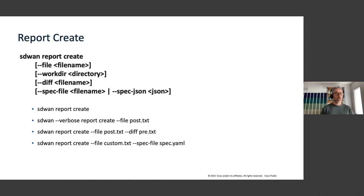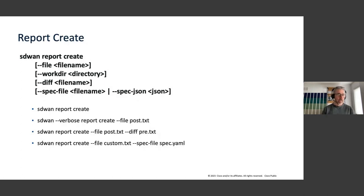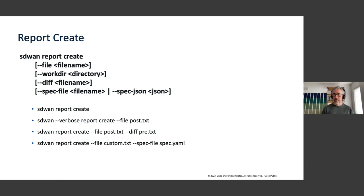Another task worth highlighting is the report task, which allows you to run multiple SASTRE commands in sequence and generate a report containing the output of those commands. It is used a lot for change window pre/post check scenarios. There is a default report with a predefined set of show commands — listing all templates and template values, showing control connections, etc. — but you can also customize it and define the specific commands you'd like to execute.